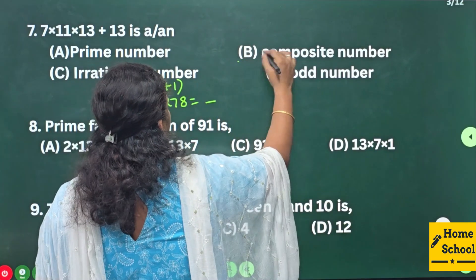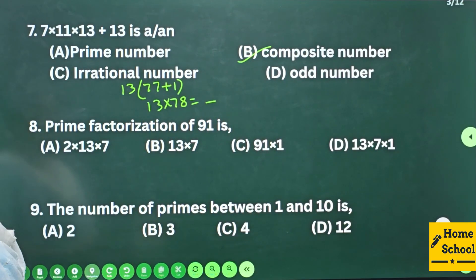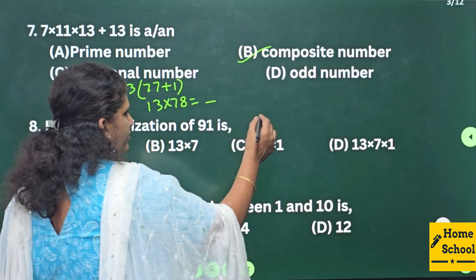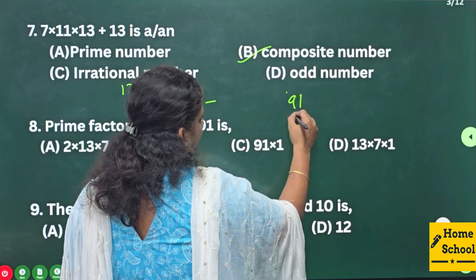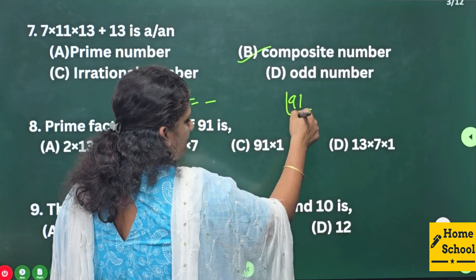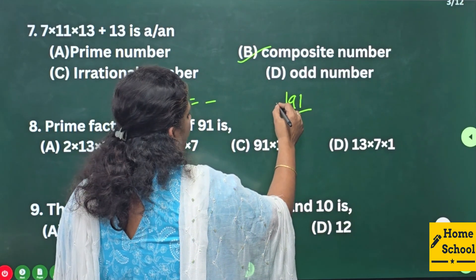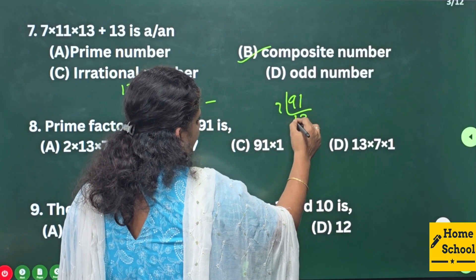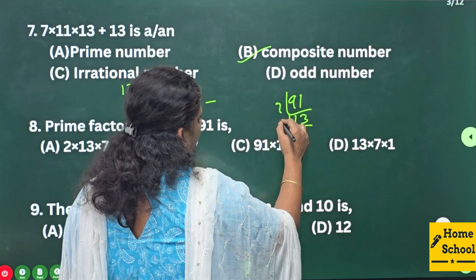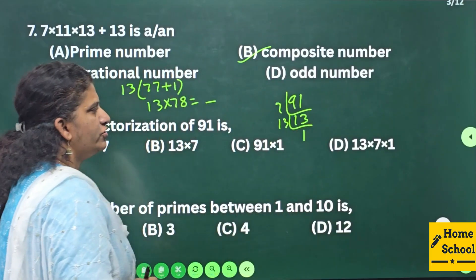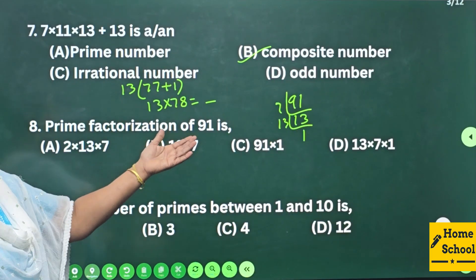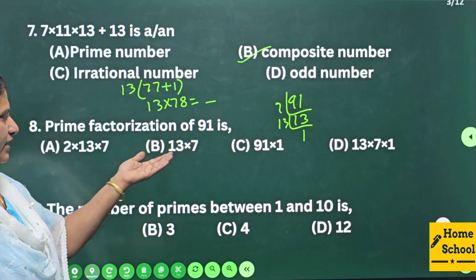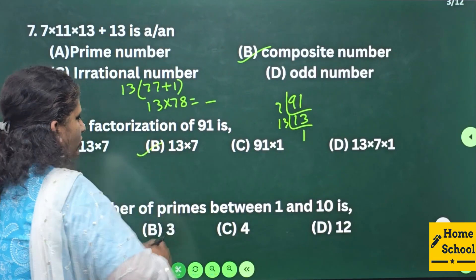Question 8: The prime factorization of 91 is — you need to factorize 91. 7 ones are 7, 13 ones are 13, so your answer is 7 × 13. The factors are at option B.